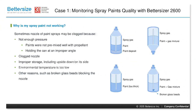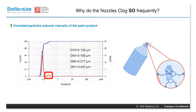This first case study covers monitoring spray paint quality with the Betasizer 2600. A common question — why is my spray paint not working — led to investigating culprits from low pressure and poor mixing to clogged nozzles and improper storage. The Betasizer 2600 identified oversized particles; the distribution curve reveals that peak highlighted in the red box, even when most particles are the right size. These oversized particles disrupt the optimal packing of smaller particles, reducing overall viscosity and leading to inconsistent flow and clogging.